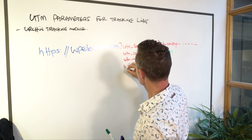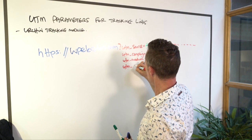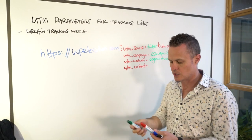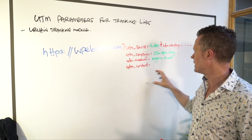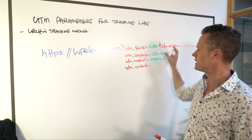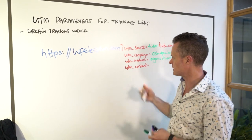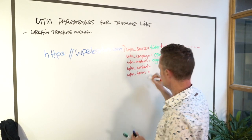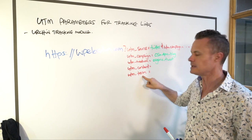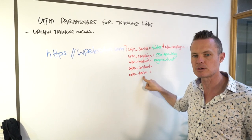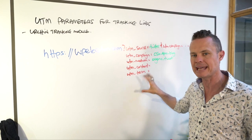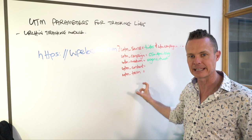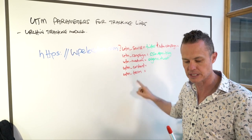There are two parameters left. The next one is content, but what's more important to understand first is UTM term, as these things get mixed up a lot. Term is the keyword that you're bidding on — so if you're using UTMs when you run paid ads, this will be the keyword that you're actually advertising against. If this isn't a paid ad link, then term will be the audience that you're promoting it to.